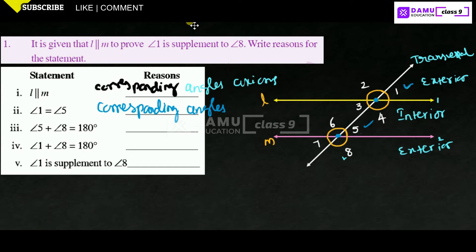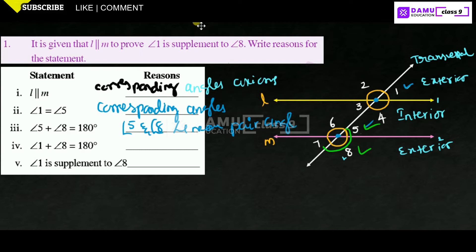Next, angle 5 plus angle 8 equals 180 degrees. Angle 5 and angle 8 form a linear pair — they are adjacent angles on a straight line, so their sum is 180 degrees.